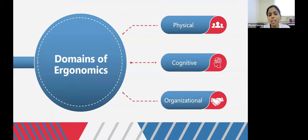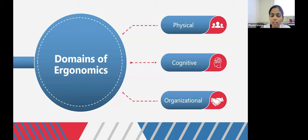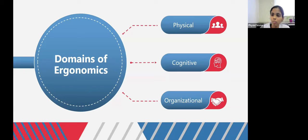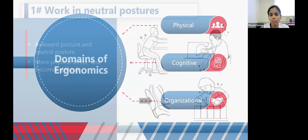Moving on to the types or domains of ergonomics, there are three: physical ergonomics deals with the human body and how physical tasks and activities interconnect with biomechanical, anatomical, and physiological factors. Cognitive ergonomics is all about the human brain and how it works. Organizational ergonomics is all about how systems, work systems, and cultures take place. We will start with the principles of physical ergonomics.